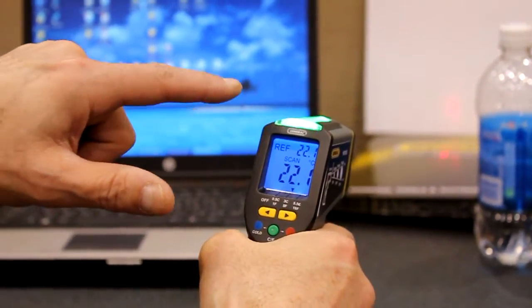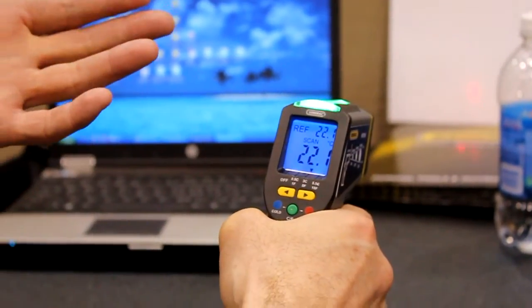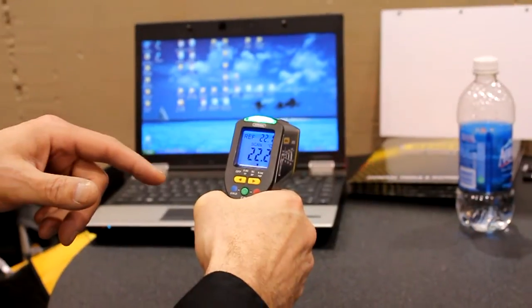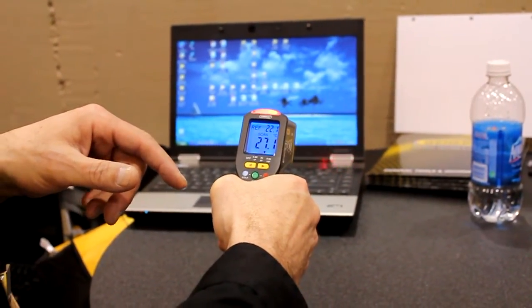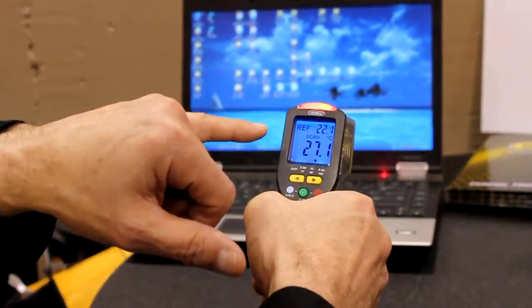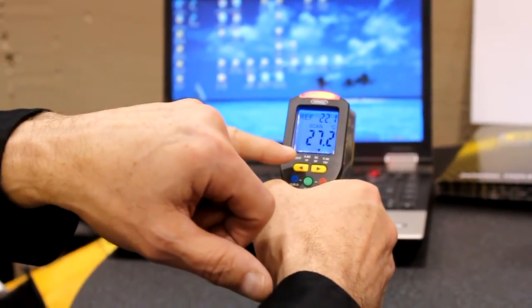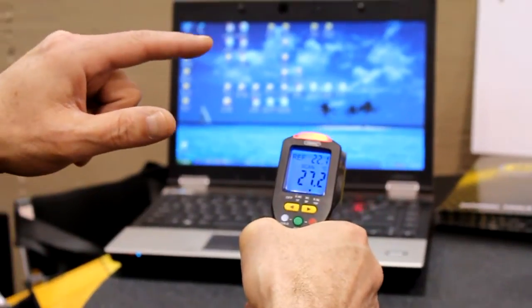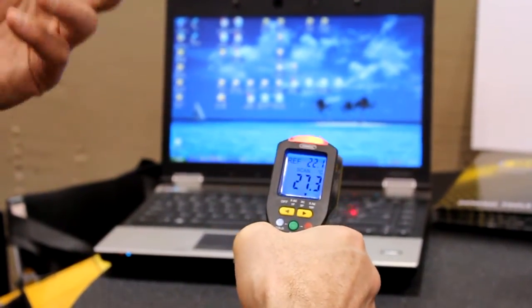As you move away from that, it becomes normal again because this is the temperature that you had previously acquired. Now, as you hit a target that is warmer, as you can see now this laptop is 27 degrees. It's more than 3 degrees from your reference, and you get a red indication with a faster beep.